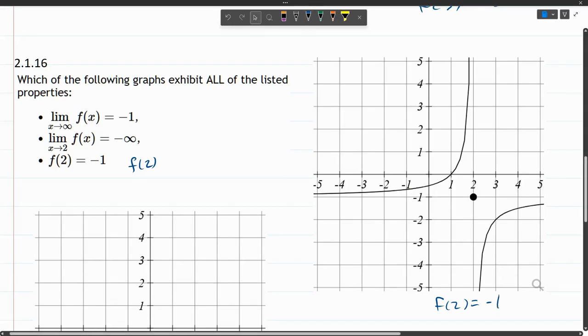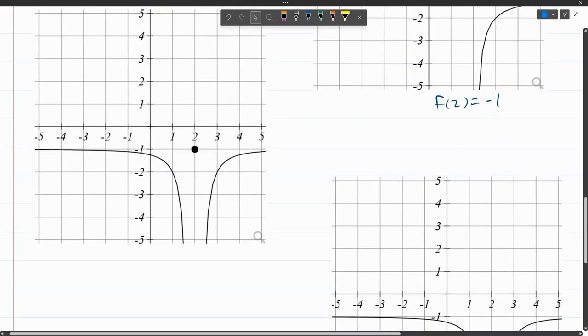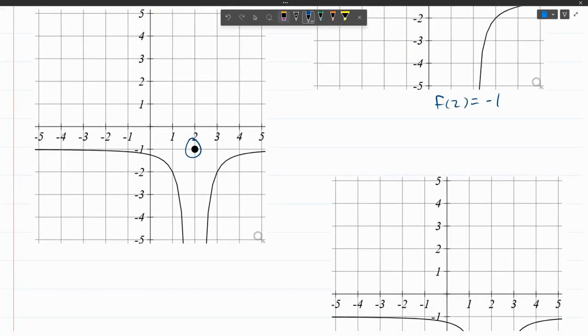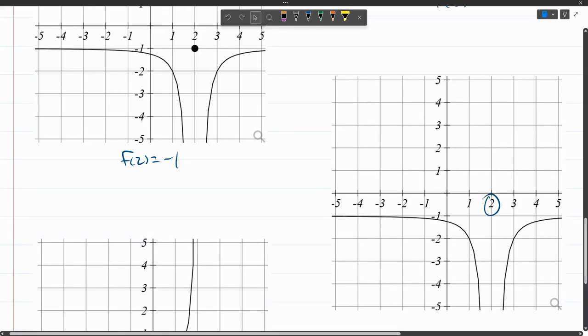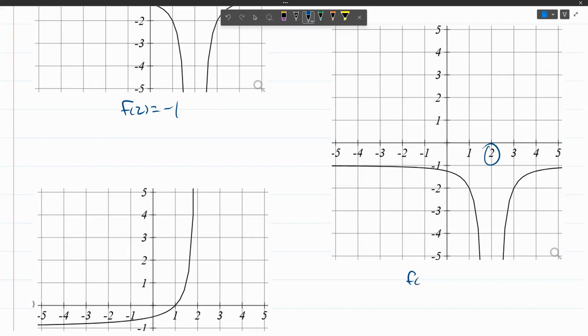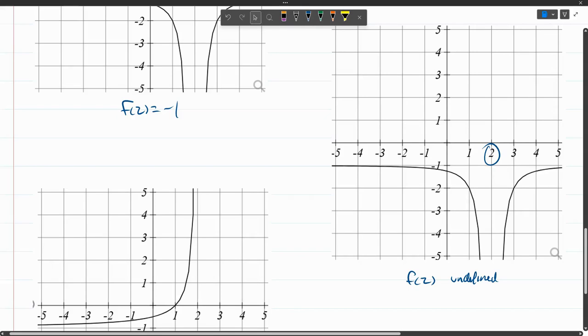Next graph. This one, f of two is also negative one. Next graph, f of two. If you look, when x is two on this graph, there is no y value. So that means f of two is undefined, which means it's not negative one. So that graph is out.